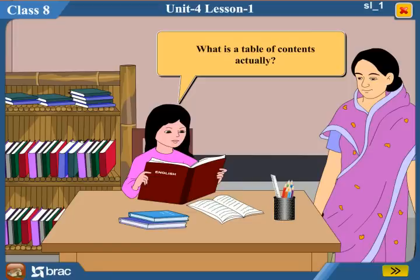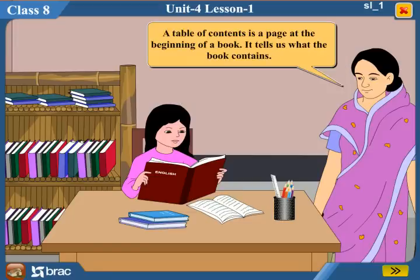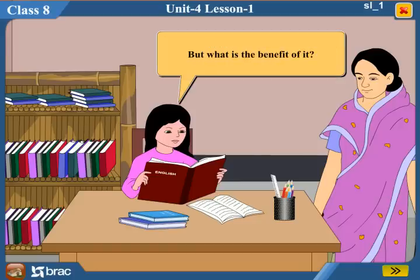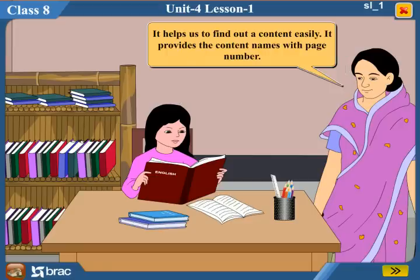What is a Table of Contents actually? A Table of Contents is a page at the beginning of a book. It tells us what the book contains. But what is the benefit of it? It helps us to find out content easily. It provides the content names with page numbers.